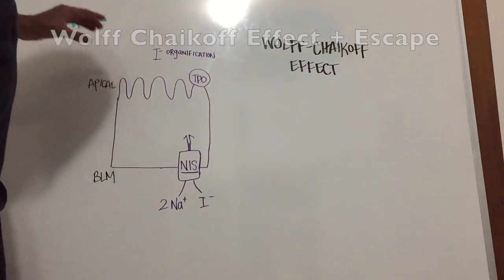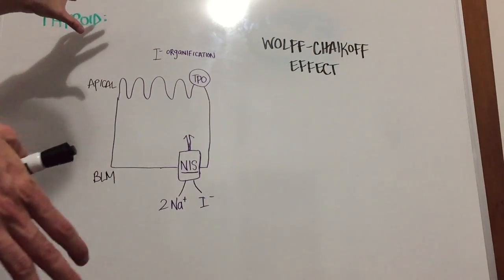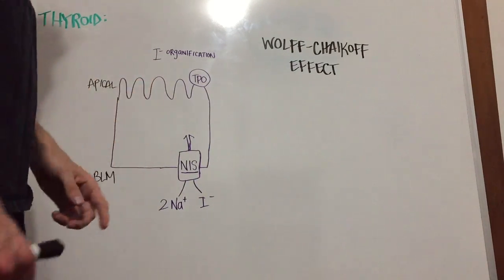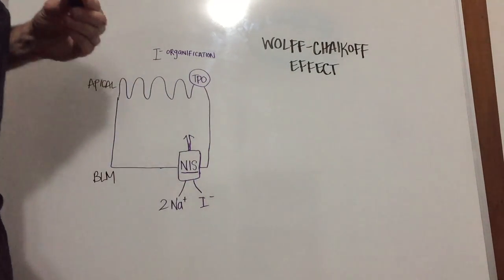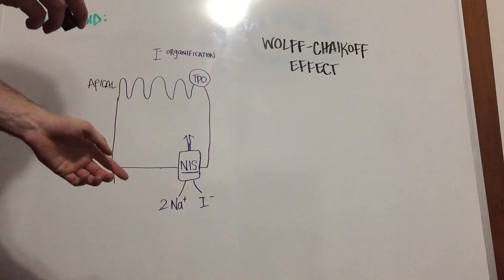I want to orient ourselves. So right now we're looking at the thyroid gland, specifically a thyrocyte, which is responsible for making thyroid hormones, specifically T4 and T3.